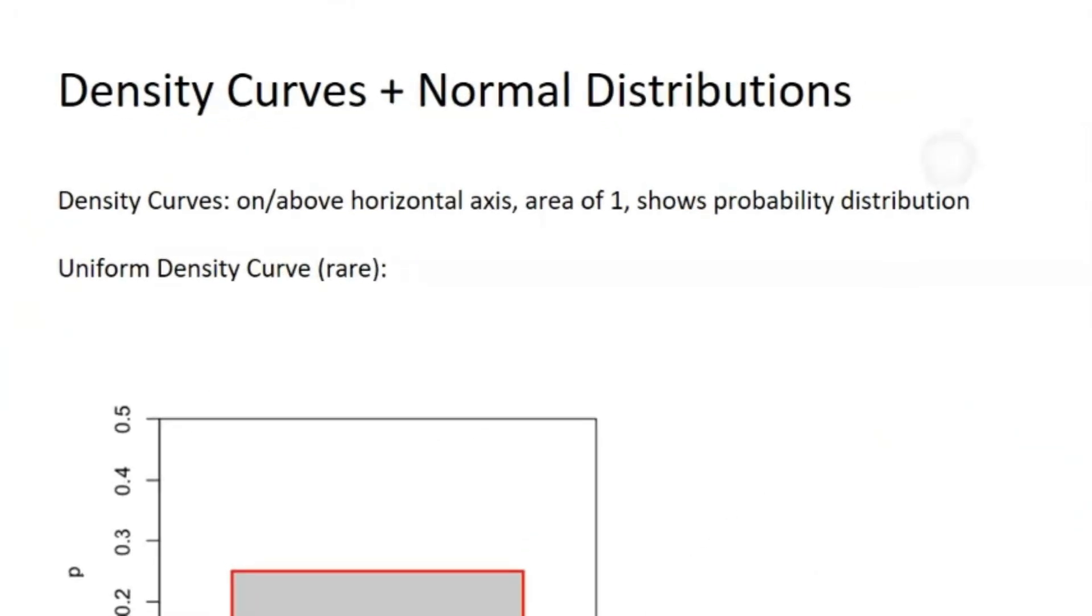Alright, so now let's talk about density curves and normal distribution. So a density curve is on or above the horizontal axis, has an area of 1, and just shows probability distribution.